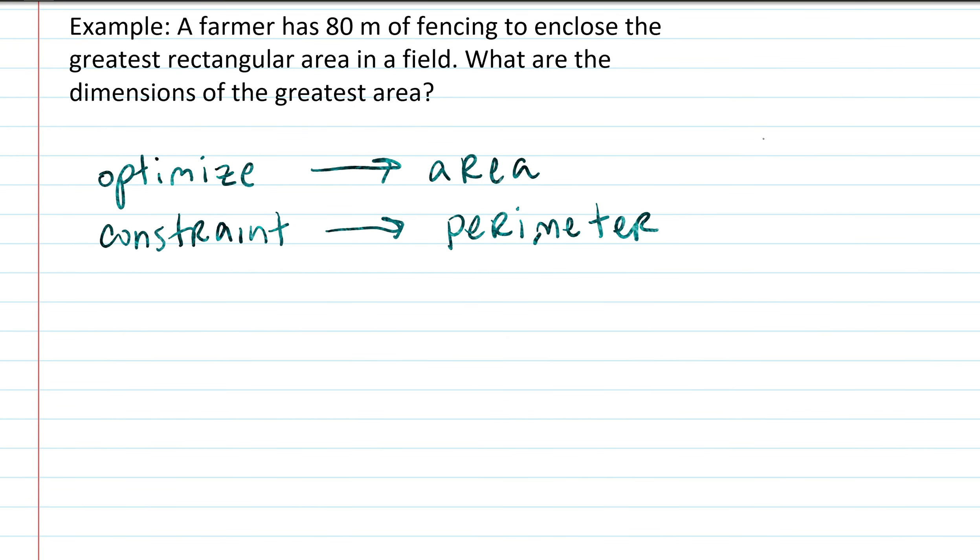First, you want to set the situation up mathematically. If you're looking at a rectangular field and the area, the area formula is A equals l times w, right, length times width. And if you're looking at perimeter, the perimeter of a rectangle, we know perimeter is just all the sides added up, but we can build it into a formula. It's 2l plus 2w, and we're told that the perimeter is 80, so we can say it's equal to 80.